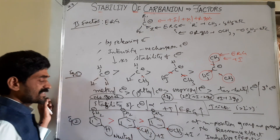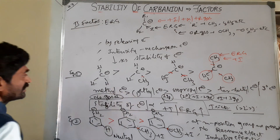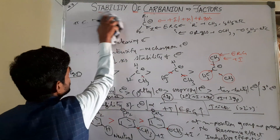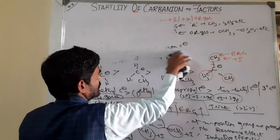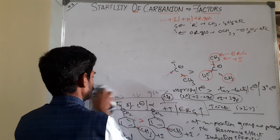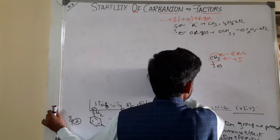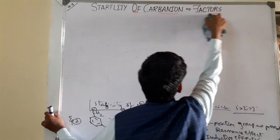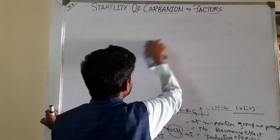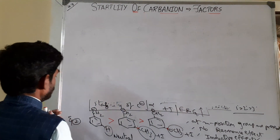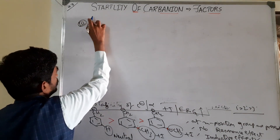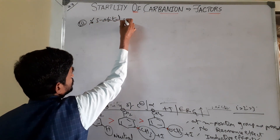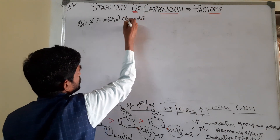So the order of stability is: hydrogen-substituted carbanion is most stable, next methyl-substituted, then methoxy-substituted is least stable. Up to here, is it clear? The next factor we will do is percentage of S-orbital character.